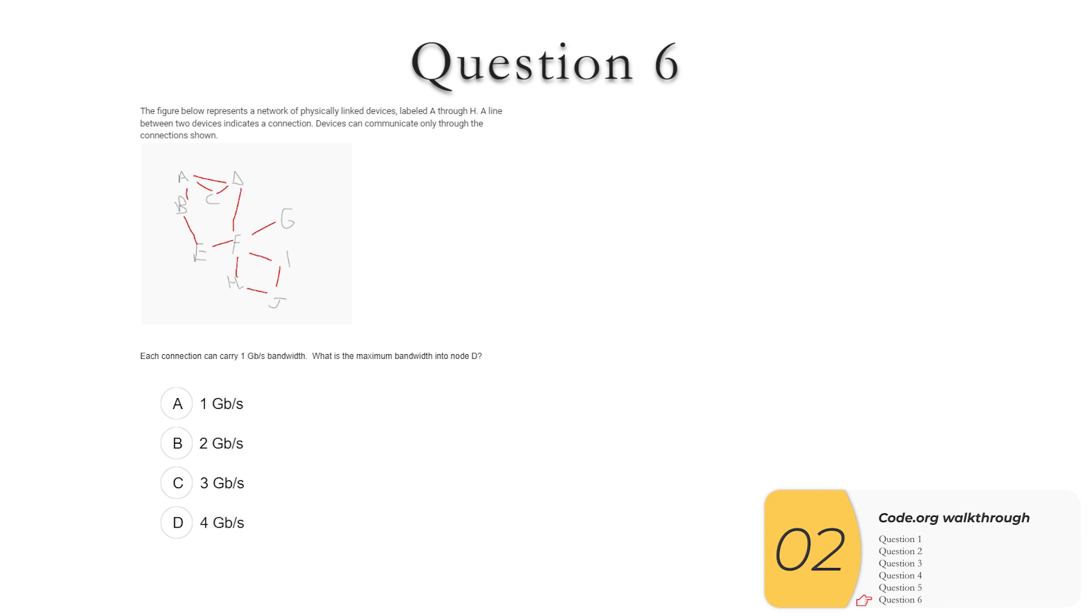Finally, the last question asks about bandwidth. So each connection carries one gigabit per second. What is the bandwidth into D? Well, into D, I have one, two, three connections. So if I add those all up, it means I have three gigabits per second. In general, more connections will give you more data per second in addition to redundancy. So this part is not going to be in the APCSP exam. The exam only asks you about redundancy, but if you pay for the extra connection, usually you get more bandwidth also.